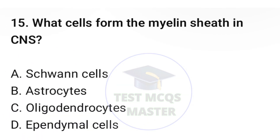Question number fifteen: what cells form the myelin sheath in the CNS? The correct option is C, oligodendrocytes.